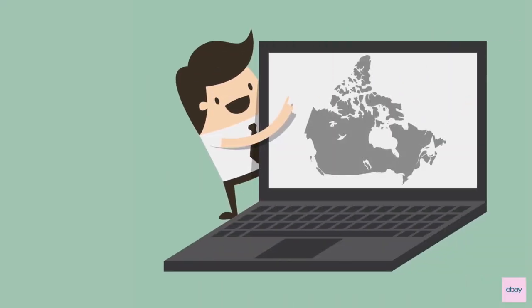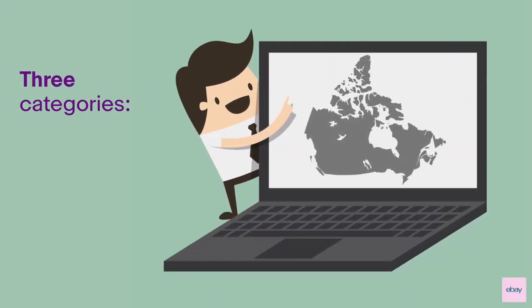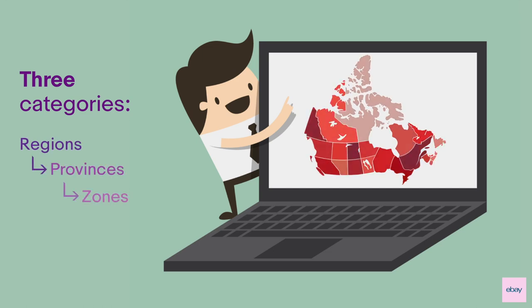Shipping rate tables divide the country into three categories: regions, provinces, and zones.